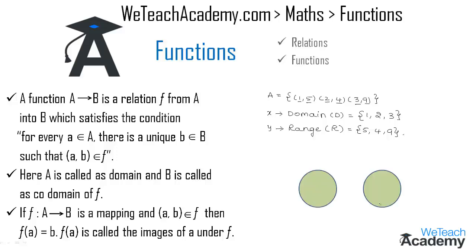Here we have two diagrams A and B, and f is a mapping from A to B. Let us map A with B — (a, b) belongs to f, so a is an element of A and b is an element of B. So f(a) = b, and f(a) is called the image of a under the function f.